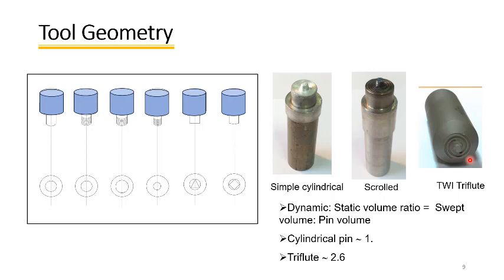Another thing to notice is that the shoulder is not flat but slightly concave. That concavity is provided to ensure that the softened material is confined — when the material is plasticized and deforming under a vertical load, the concave shoulder prevents it from squeezing out. This ensures the plasticized material is totally confined under the tool and joining occurs without any loss of softened material.